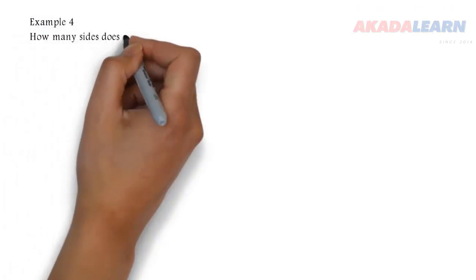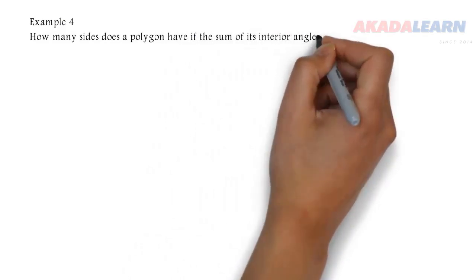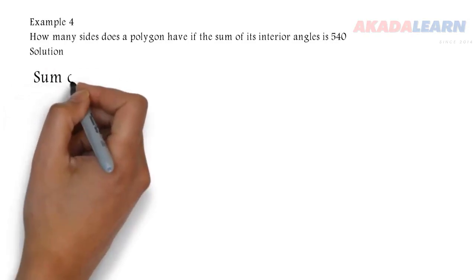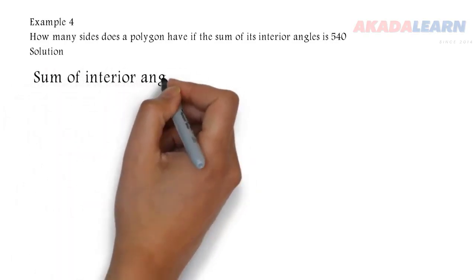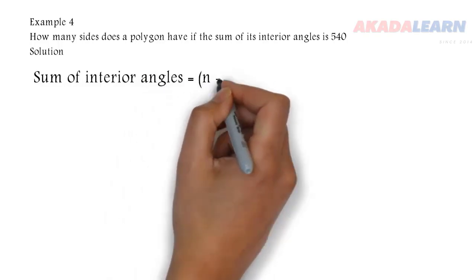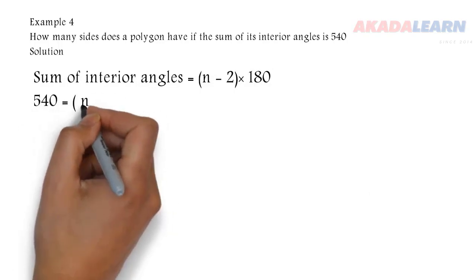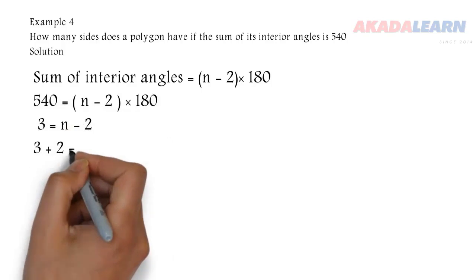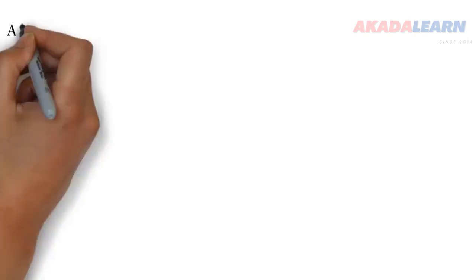Let's see another example: how many sides does a polygon have if the sum of its interior angles is 540 degrees? We set up the sum of interior angles formula: (n-2) times 180 degrees equals 540. We divide both sides by 180 and get 3 equals n minus 2. We add 2 to both sides, so n is 5.